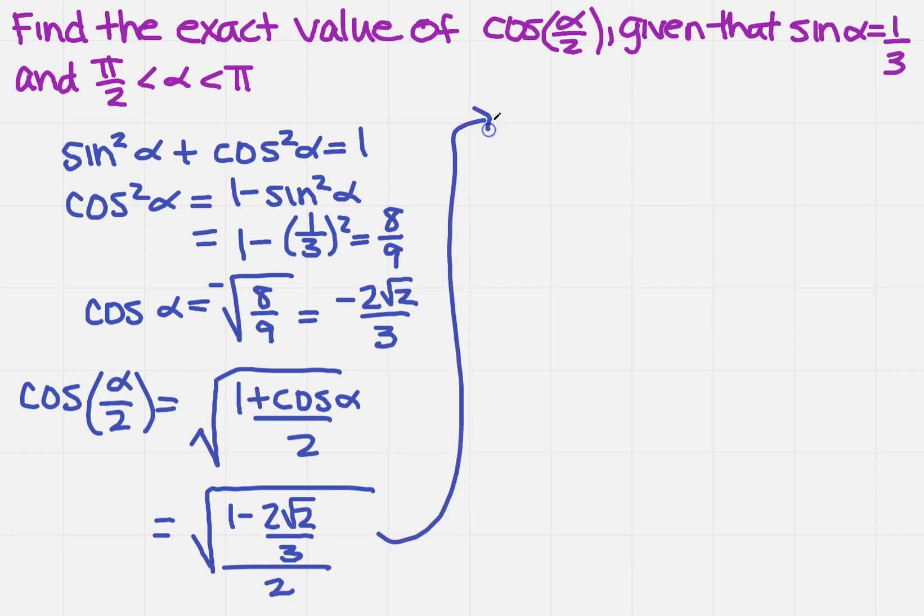So I'm going to come up here in the next column and simplify again, and that's going to give me the square root of... Now I need to find a common denominator on the top, so that's going to be 3 minus 2 square root of 2 over 3, and the whole thing is over 2. So that's going to simplify again to 3 minus 2 square root of 2 over 6.